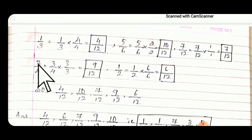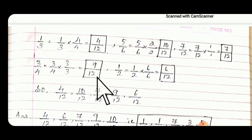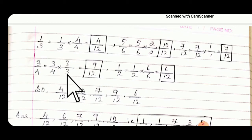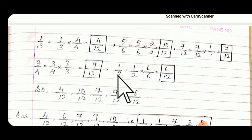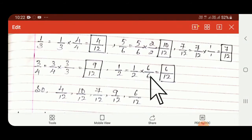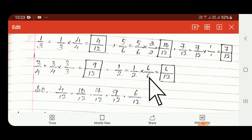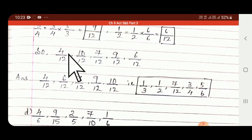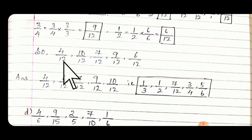For 3/4: 4 × 3 = 12, so write 3; 3 × 3 = 9, giving 9/12. For 1/2: 2 × 6 = 12, so write 6; 1 × 6 = 6, giving 6/12. Now collect all the converted fractions: 4/12, 10/12, 7/12, 9/12 and 6/12.